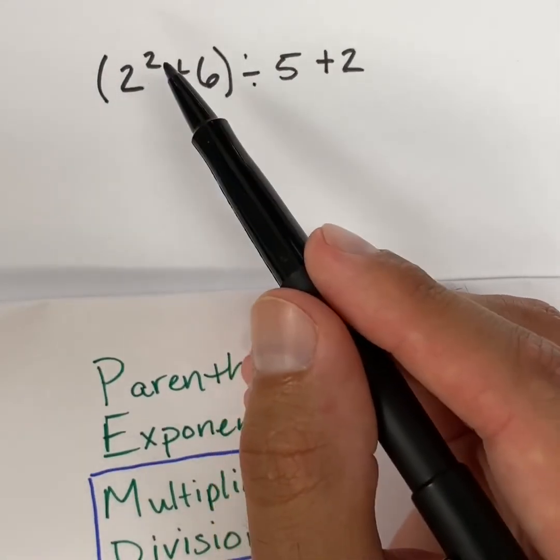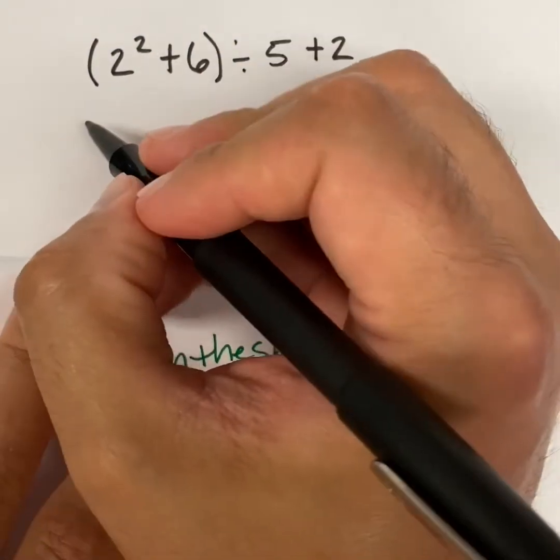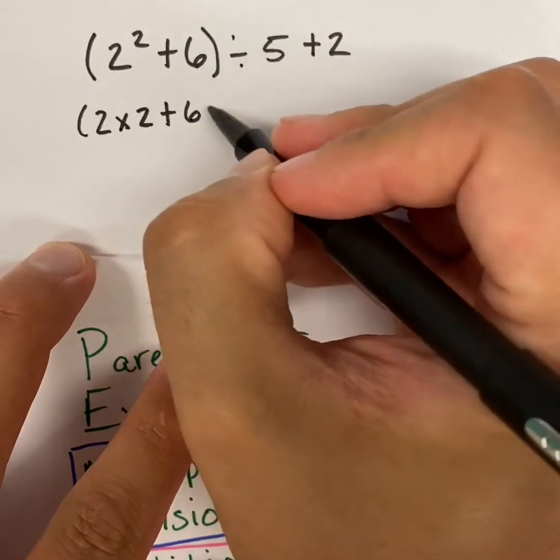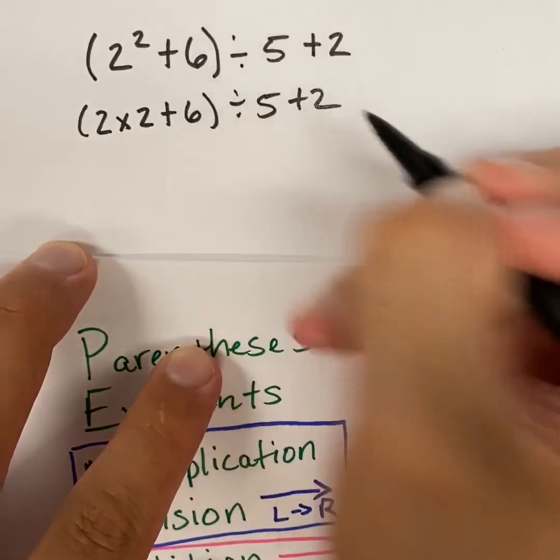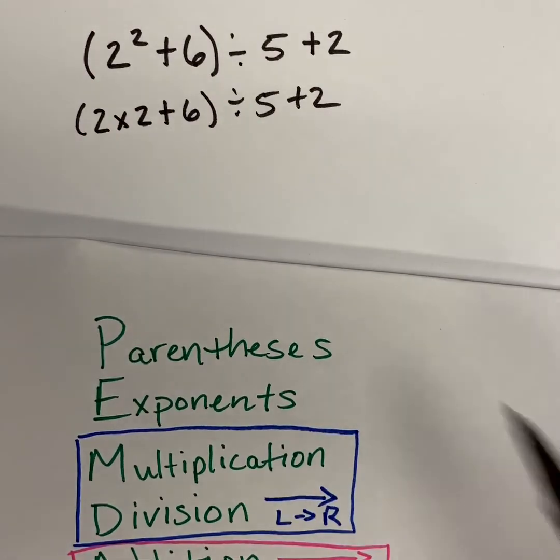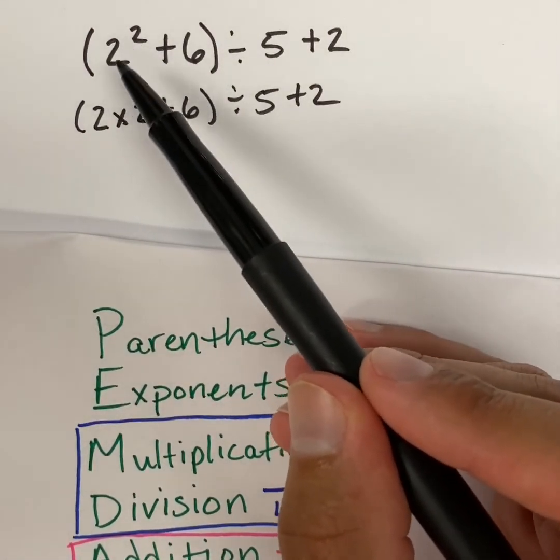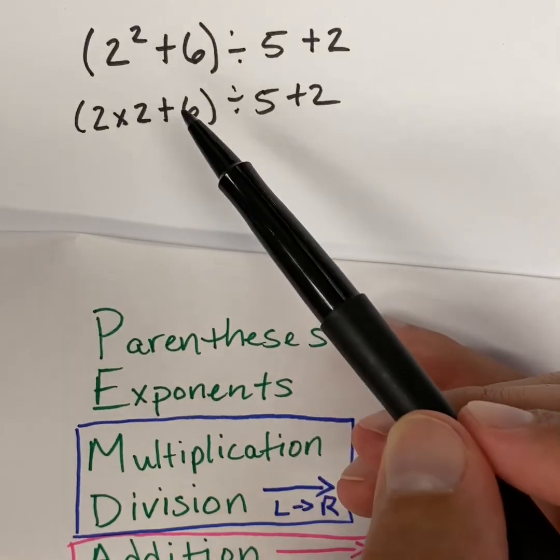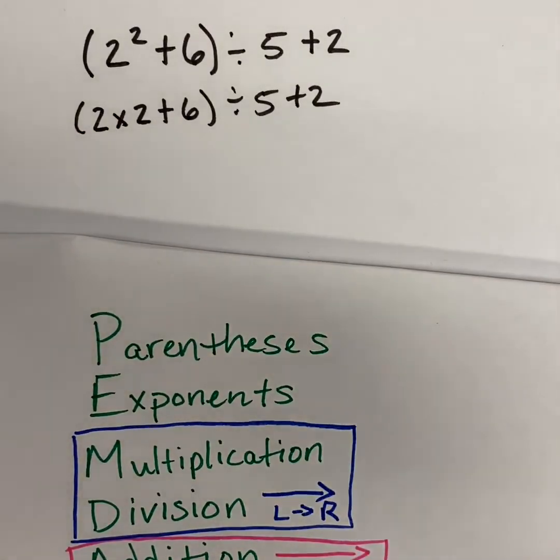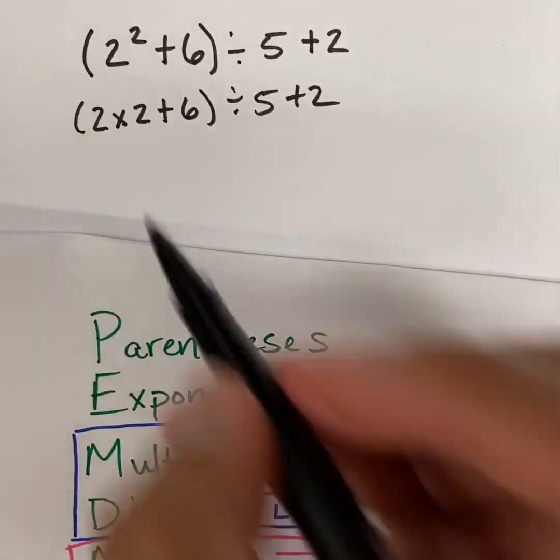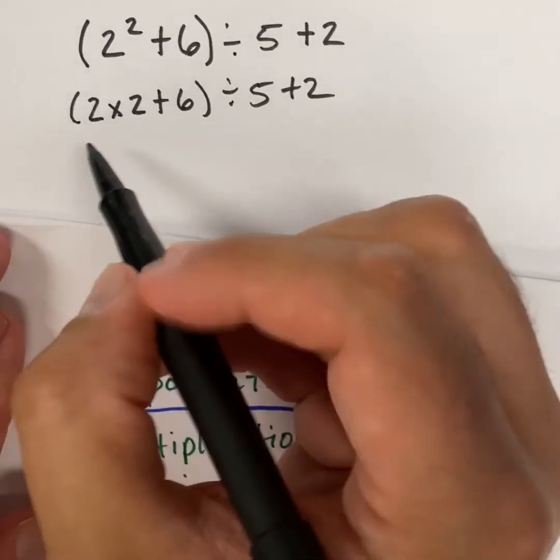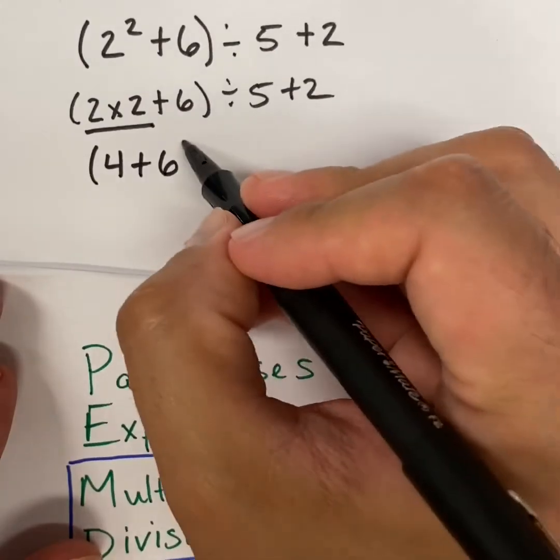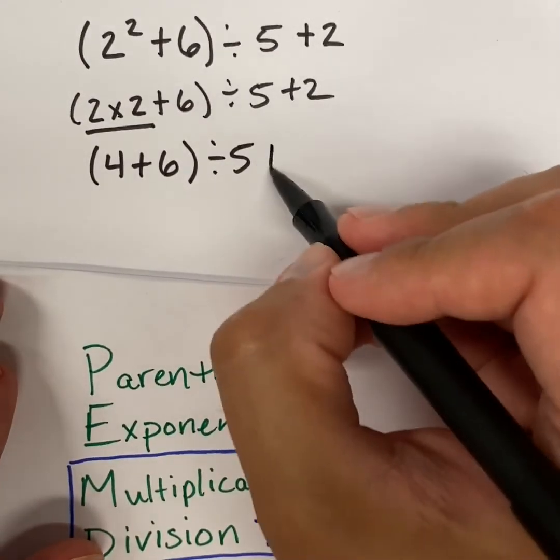So here we have 2 squared. Well, what this actually means is I want to write it out. It actually means 2 times 2 plus 6. So we could rewrite the problem like that. Remember, when we have an exponent, that just means that you're multiplying this number. You're going to have that multiple times. So if this was 2 to the third power, we would have 2 times 2 times 2. We would have three 2s there. So when we go ahead and do this, we're going to work through it. So we're going to do multiplication and division next because that's our next thing. So we have this right here to do, the 2 times 2. So we have 4 plus 6 divided by 5 plus 2.